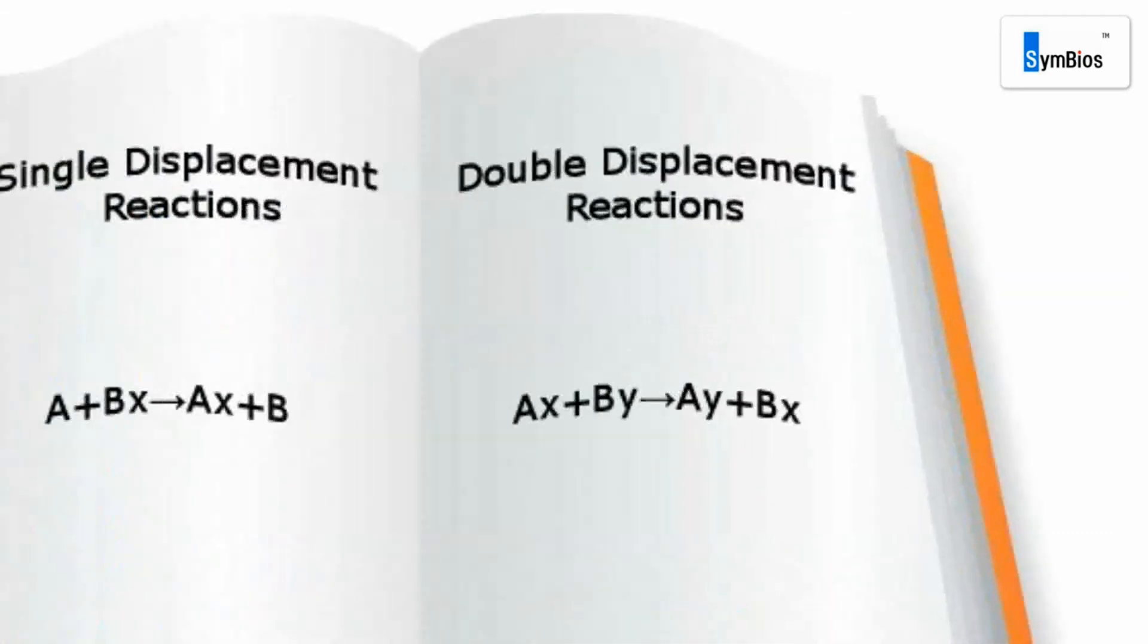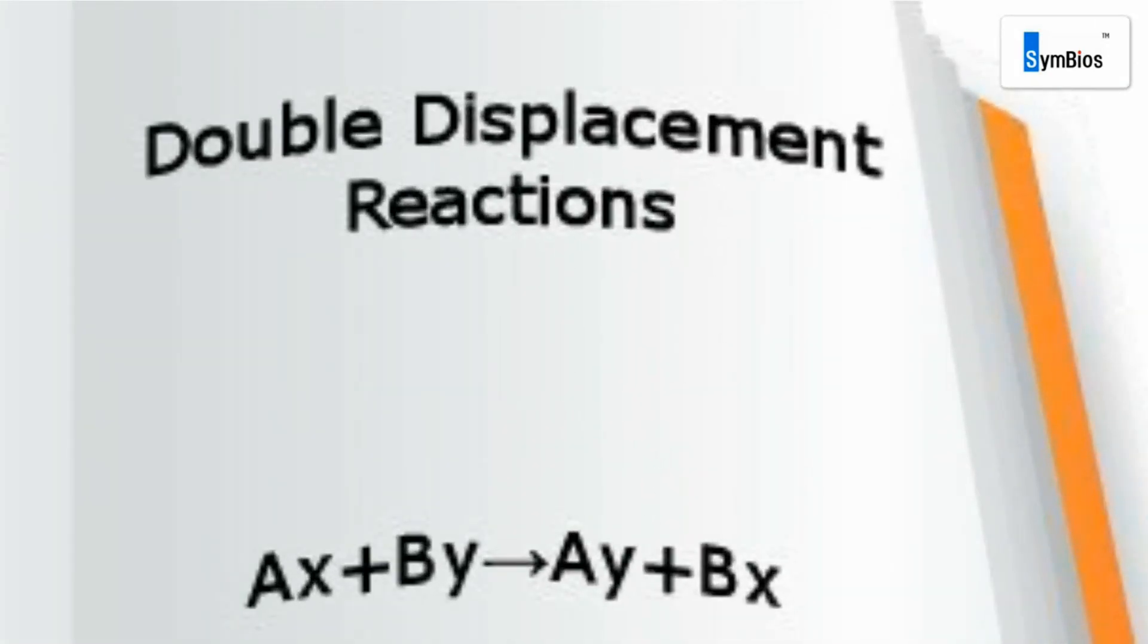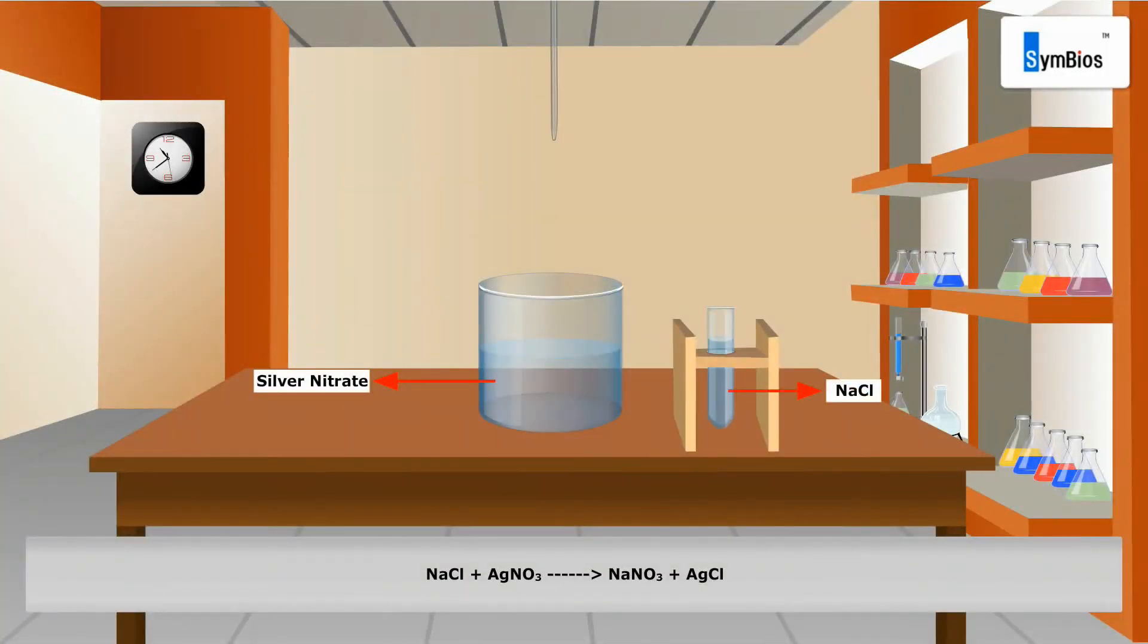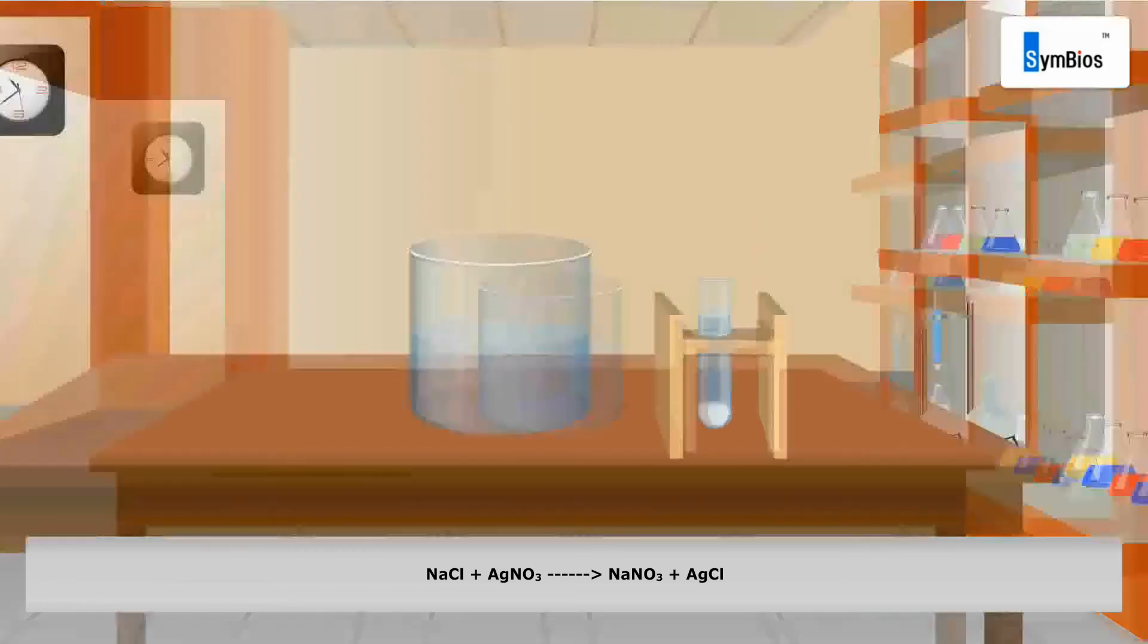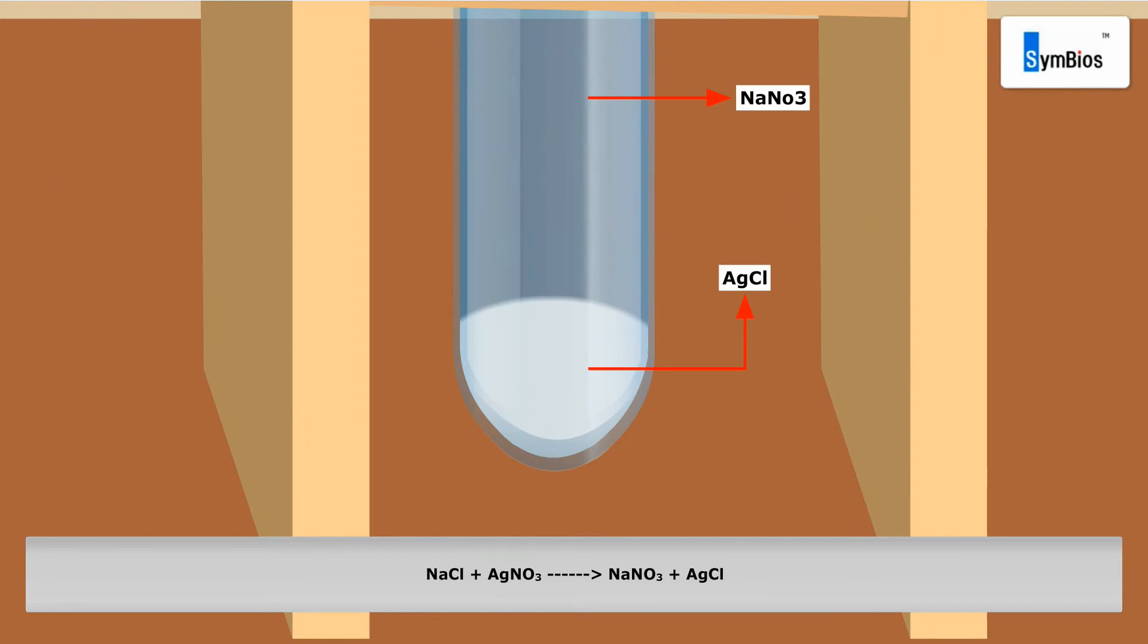Double displacement reaction. Generally, double displacement reaction occurs in solutions. When the aqueous solution of sodium chloride reacts with silver nitrate solution, the solution turns to sodium nitrate, and white precipitate of silver chloride is formed.